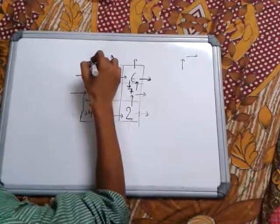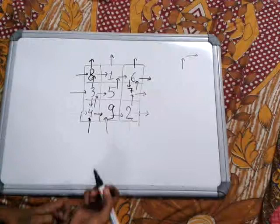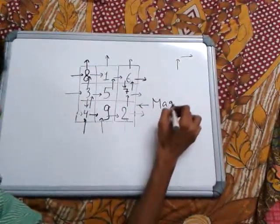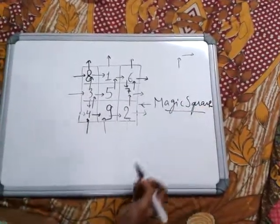Now, one up and one right. One up and one right. Yeah, we have got magic square. Is it not simple?